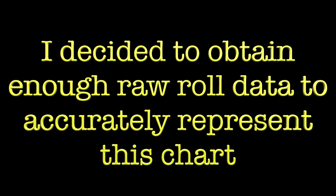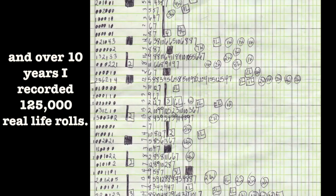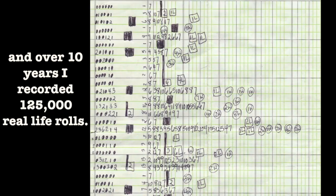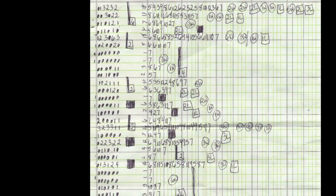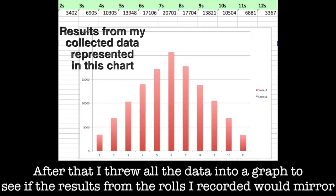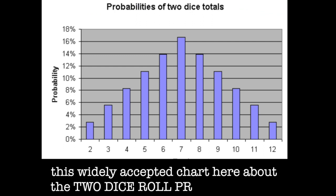So I decided to obtain enough raw roll data to accurately represent this chart and over 10 years I recorded 125,000 real life rolls. After that, I threw all the data into a graph to see if the results from the rolls I recorded would mirror this widely accepted chart here about the two dice roll probabilities.